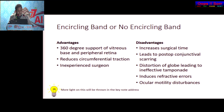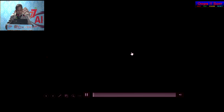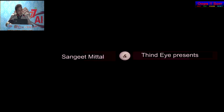Points against the encircling band: it increases surgical time, leads to post-op conjunctival scarring, globe distortion, ineffective tamponade, and induces refractive error and ocular motility disturbances. In the end, I'll show a short video and introduce my fellow colleagues who will be discussing later on.